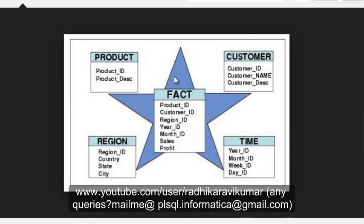Coming to the dimension table, you can see customer, time, region, and product — each is a dimensional table. The customer ID is a foreign key to our fact table. In the customer table you can see customer name and customer description, so that ID is given a description — the name of who the ID belongs to, plus details like address, city, and country — all residing in the dimensional table.